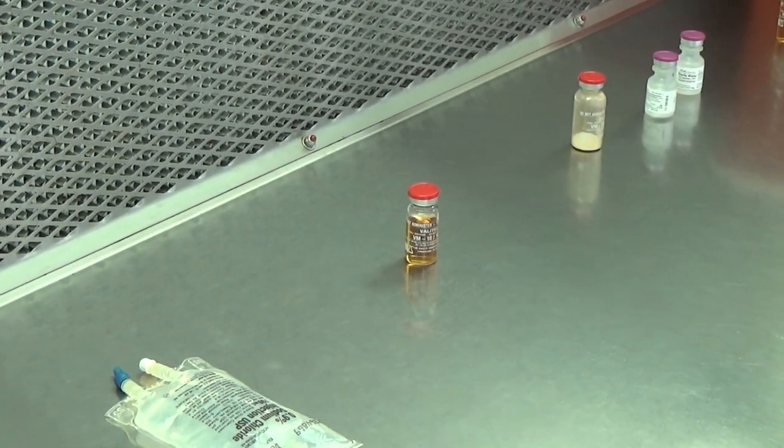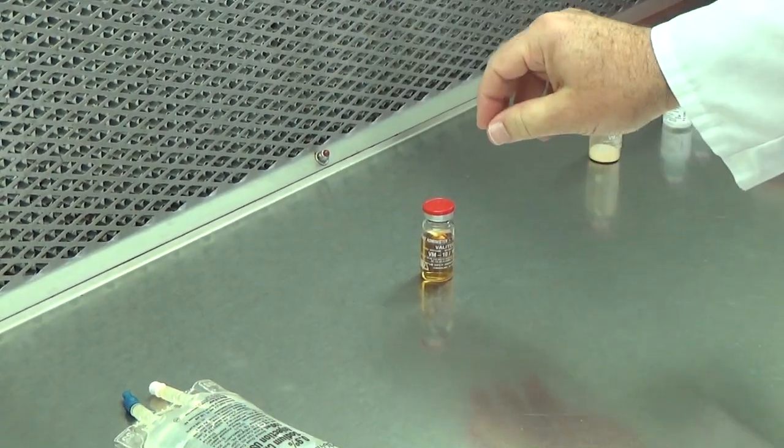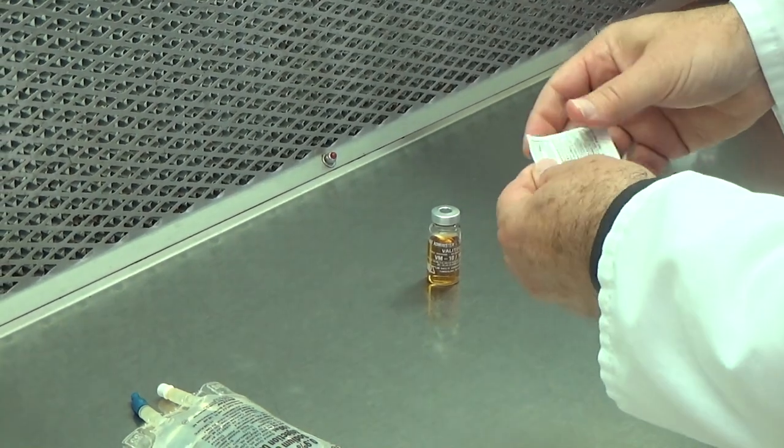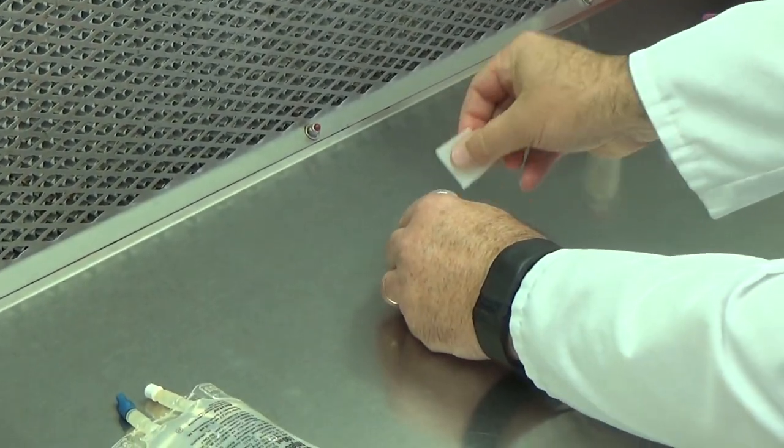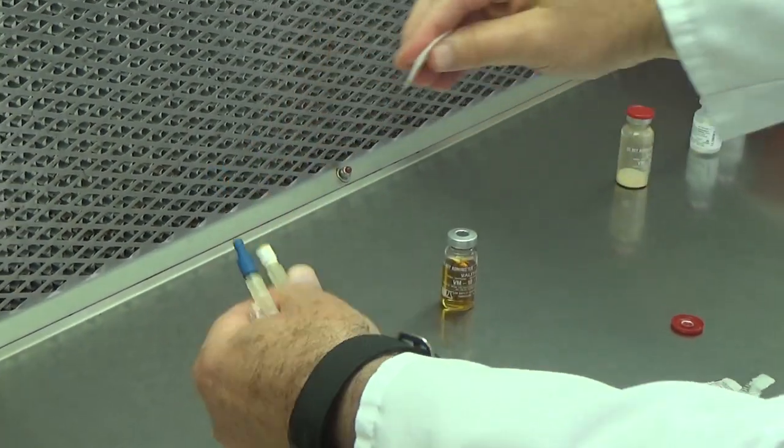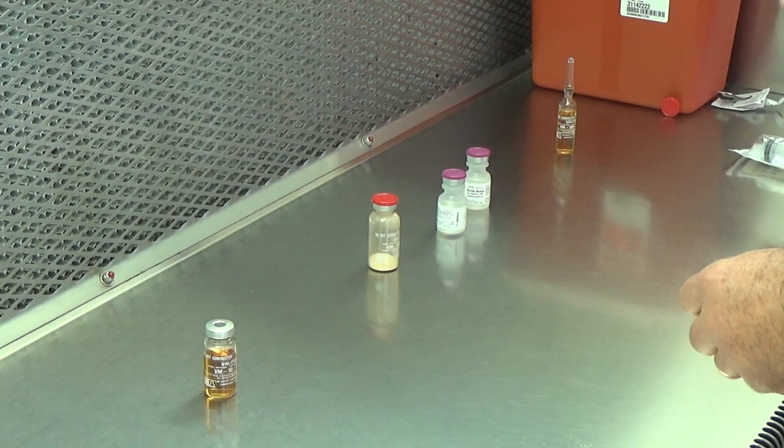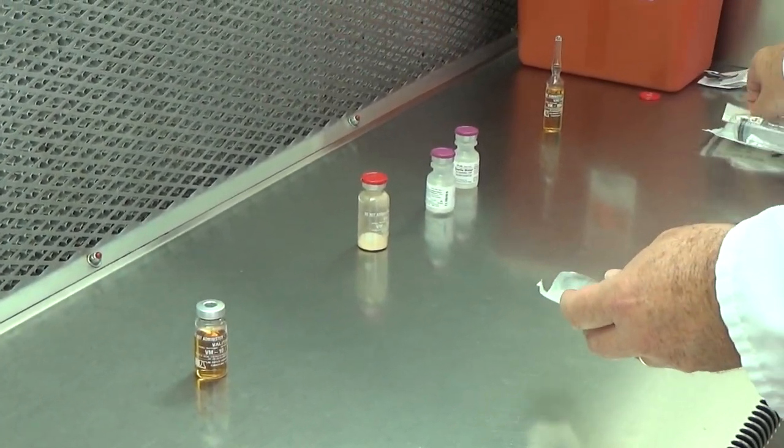The first thing I'm going to do is a simple transfer of 5 milliliters from a vial into the bag. The first thing you do is remove the tops and sanitize all your critical sites. While it's drying, assemble your needle and syringe.